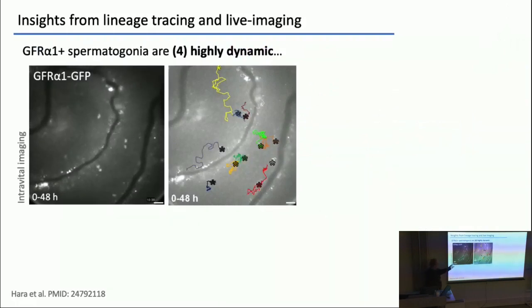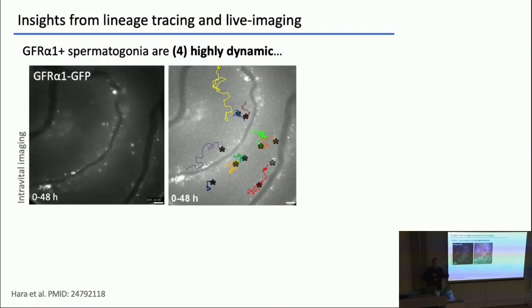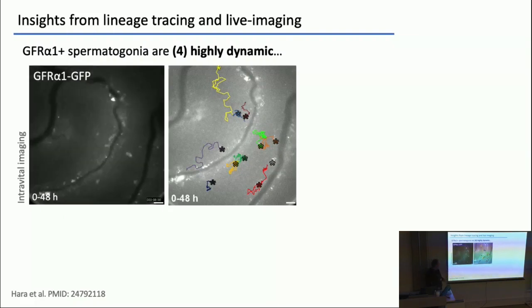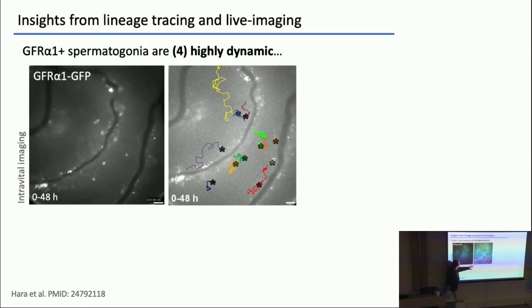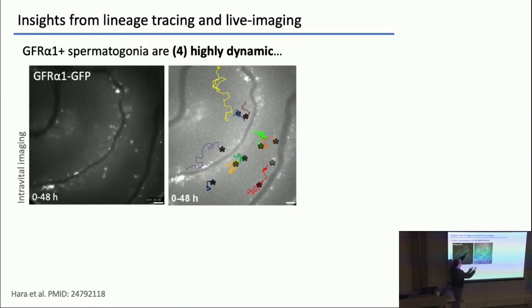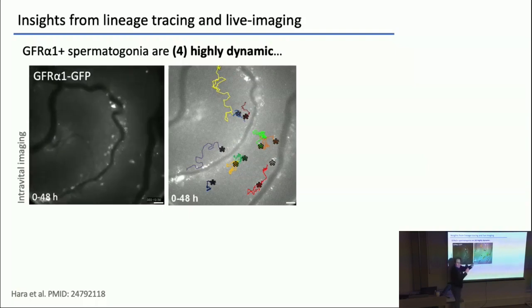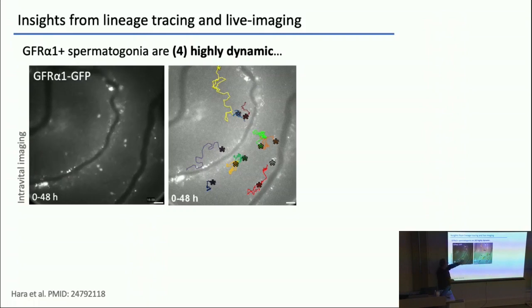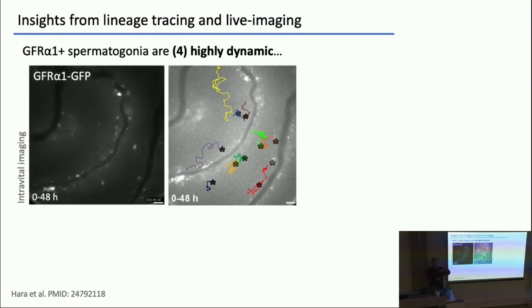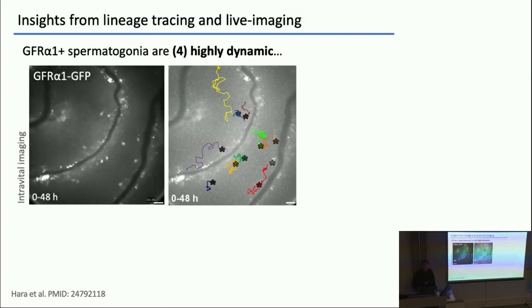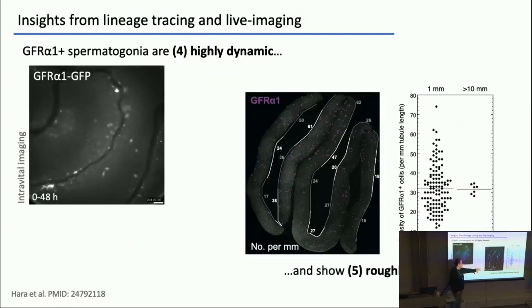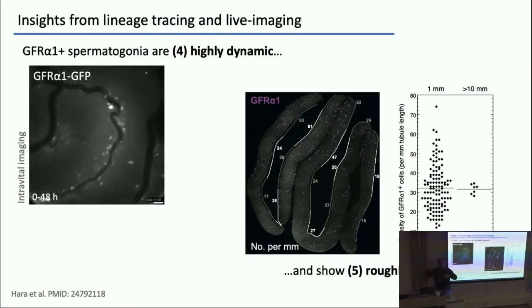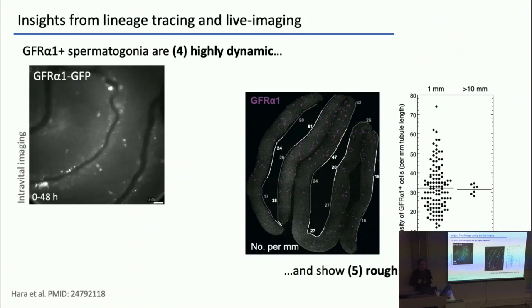These GFRA1-positive cells are highly motile on the basement membrane — they almost look like little creatures running around. This movie is over two days and here are the tracks; the scale bar is around 200 microns and they are actively migrating. They look like they're on their own, but that's because we're driving GFP off GFRA1. In fact, this is like Piccadilly Circus — it's absolutely crowded with all of their differentiating progenies. And if we score the density of GFRA1-positive cells, it's roughly uniform with no large density fluctuations.